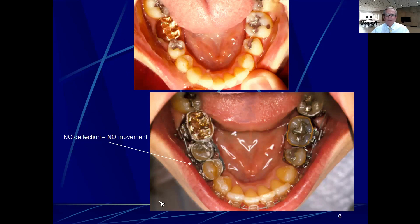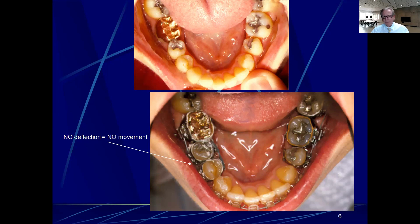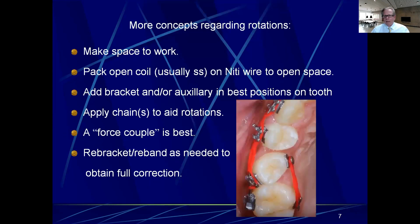Here you see the operator put a band on a lower bicuspid rotated probably 80 to 85 degrees from normal. The best they could do was get a band on it, and the wire has zero deflection — you could tie this in until you're old and gray and it will never derotate that tooth. There's a piece of chain on here that could help spin the tooth. Today most of you don't have bicuspid fitting bands, so use a button on either side with a couple of chains to help spin the tooth around. Use a button and save the good IP bracket for later.